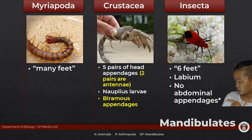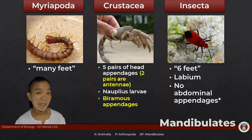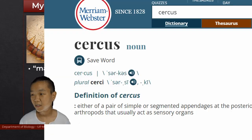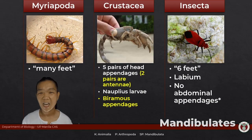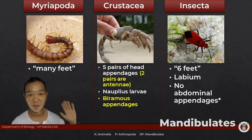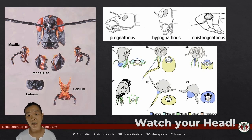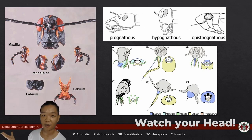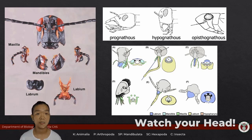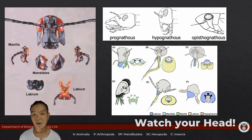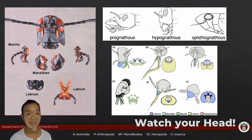So what's this asterisk doing here? For the most part, the abdomen doesn't really have appendages except cerci. One of the things that makes an insect an insect is a special mouth part called the labium, which is the fusion of the second pair of maxillae. This is more often than not the one we really get to see in the laboratory. Grasshopper mouth parts — the gold standard when studying insect mouth parts for the first time.